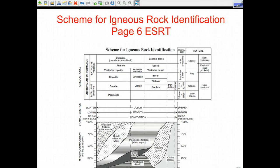And welcome to yet another screencast. This one is for the Scheme for Igneous Rock identification, which we already know is on page 6 in the Earth Science Reference Table. I know that you kids like to hang out at parties and read this chart, but I figured I'd share my insights on it, so let's get started.